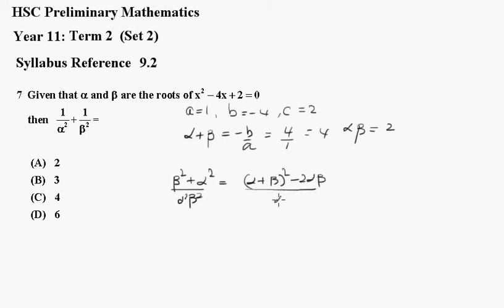All over alpha beta all squared. Now this becomes 4 squared, which is 16, minus 2 times 2 is 4, all over alpha beta squared is 4, so it becomes 12 over 4, which is 3. So b is the correct answer.